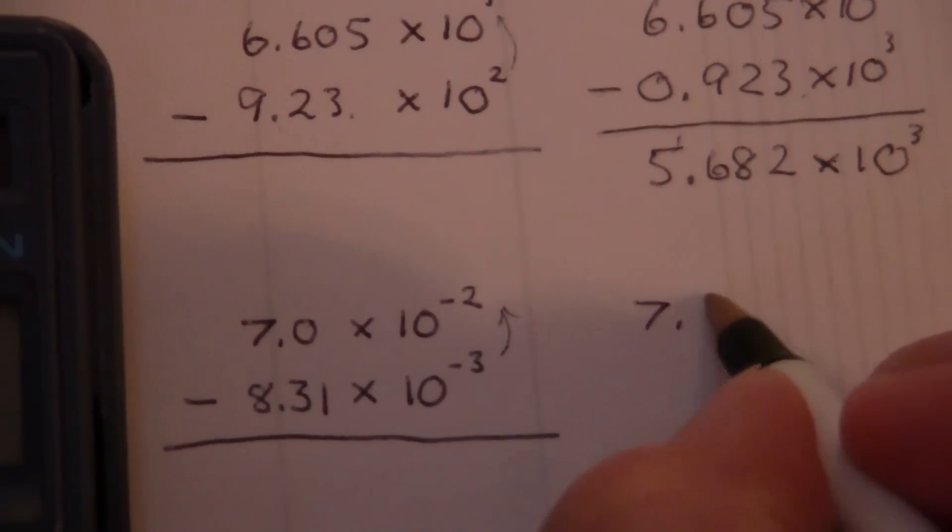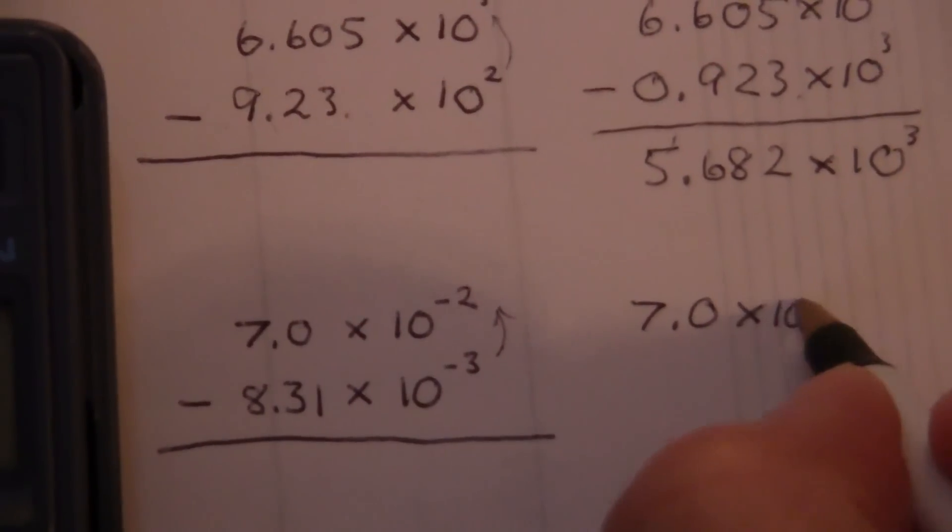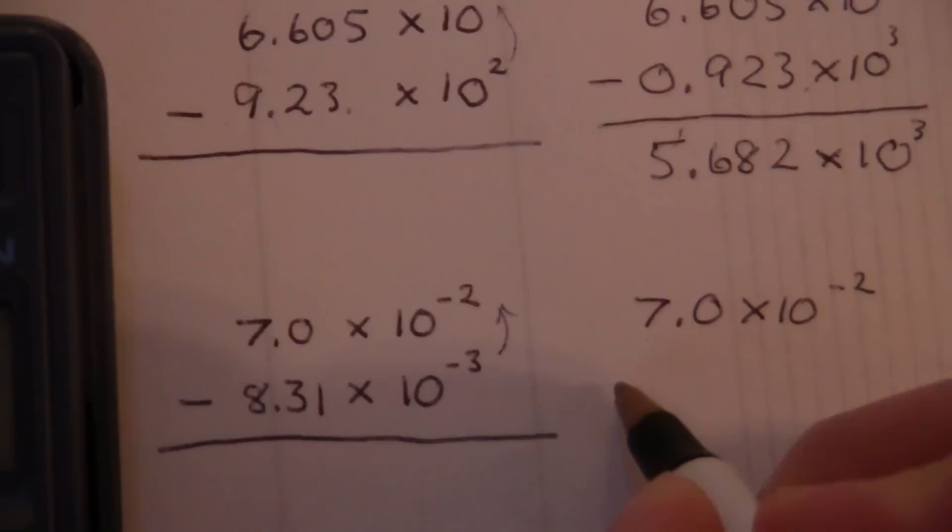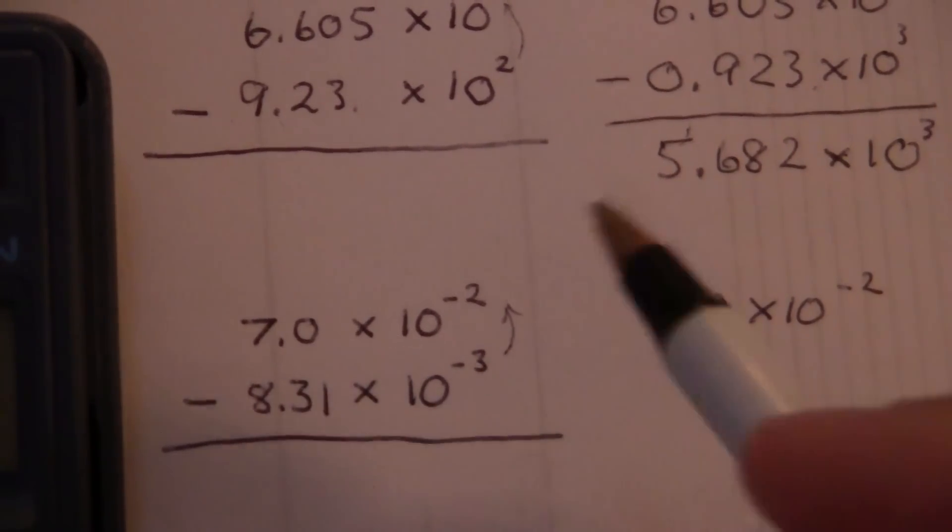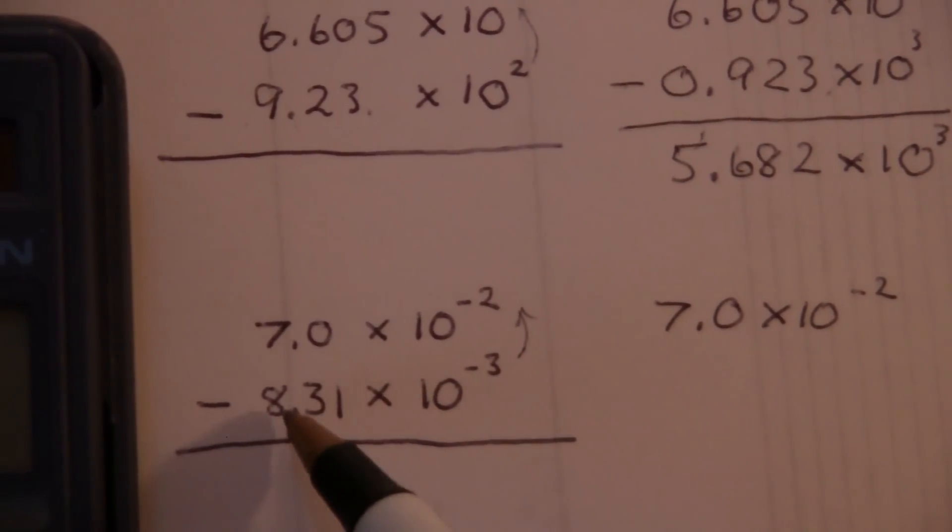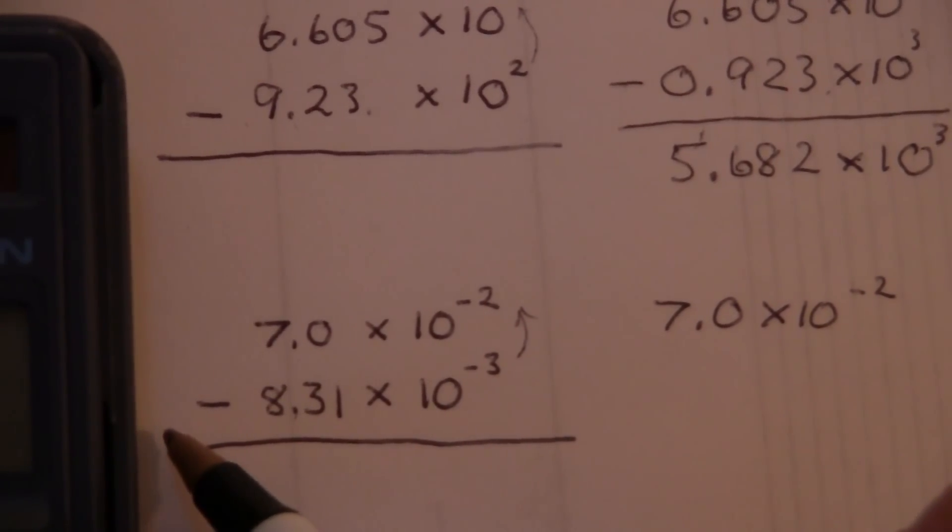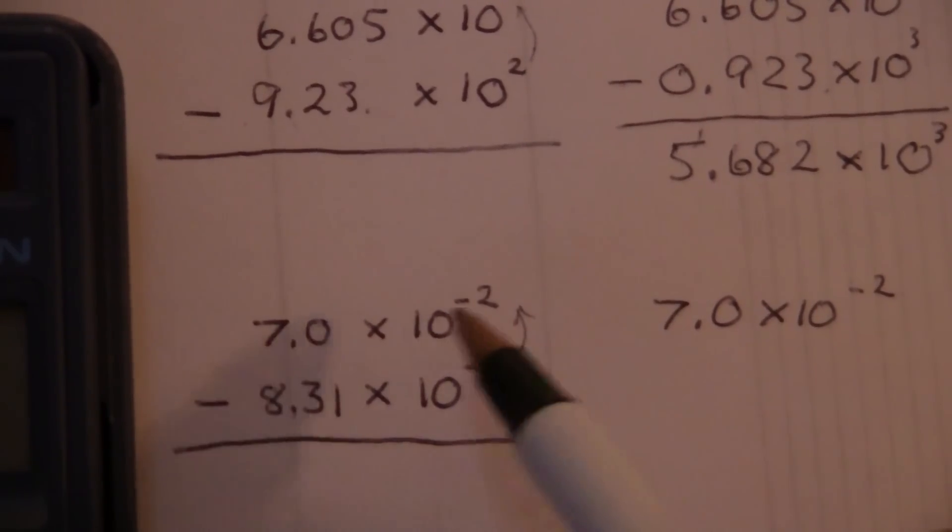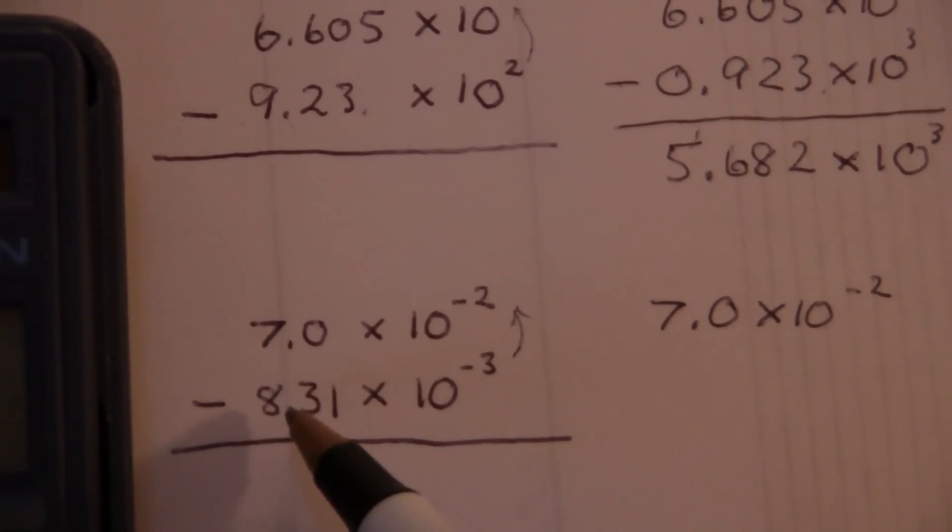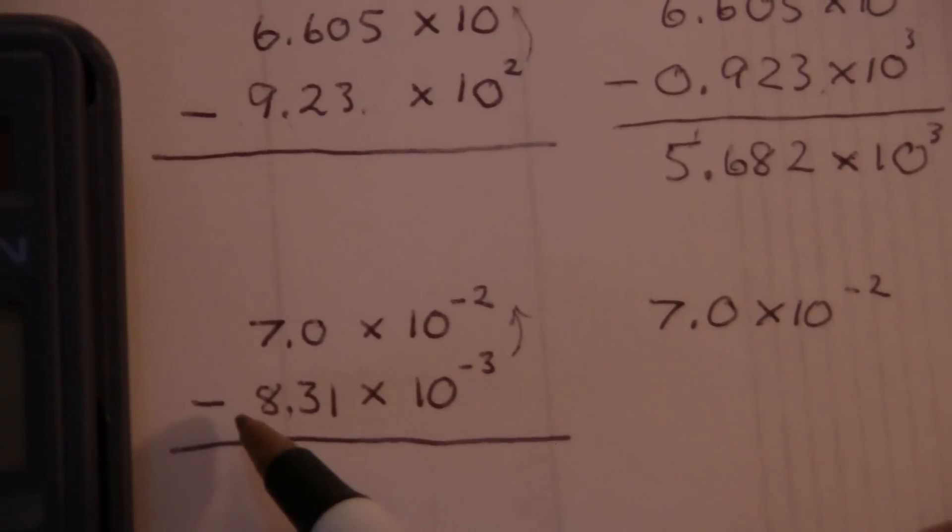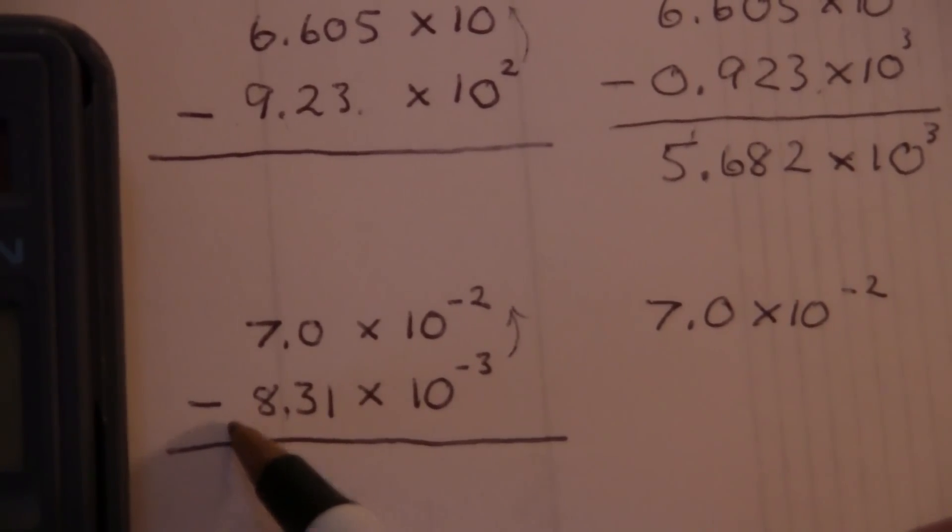We'll have 7.0 times 10 to the minus 2. And then here, what this is saying is we're moving the decimal place from here three places to the left. So it's going over this way. And if I want to get to that same place by moving it two places to the left, then I have to be one place closer.